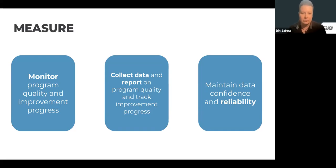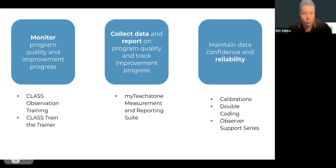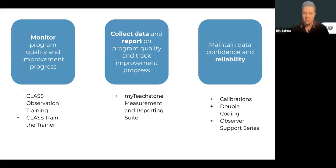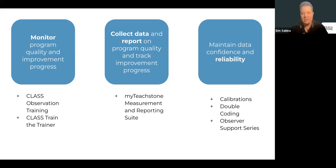For monitoring program quality, we have CLASS Observation Training where you become a certified CLASS observer on any age level from infant through grade 12. You go through the training, take the test, and become certified. Once certified, there are two paths: one is to become a trainer, so you can deliver observation training within your program, building in-house sustainability with someone who can deliver the Introduction to the CLASS Tool as well as CLASS Observation Training to build capacity.